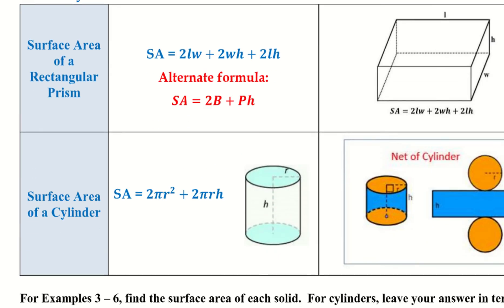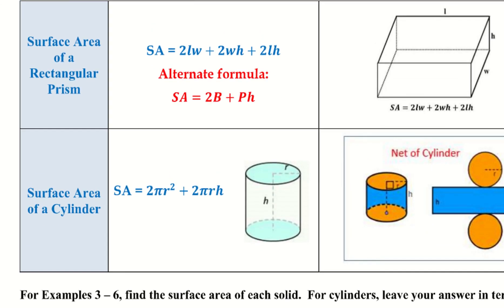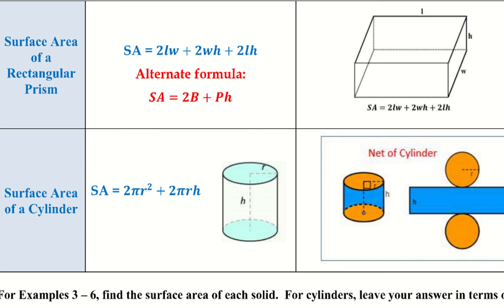The surface area of a rectangular prism is: SA = 2(lw) + 2(wh) + 2(lh). An alternate formula would be 2B + Ph, where capital B is the area of the base, capital P is the perimeter of the base, and H is the height.